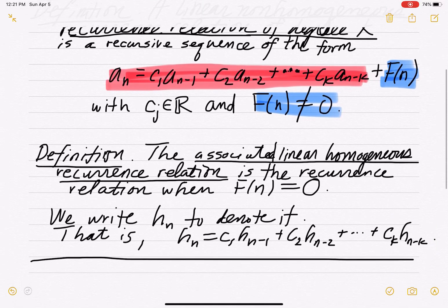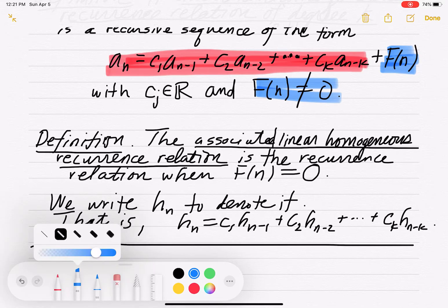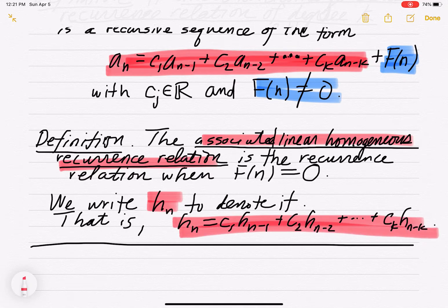Basically, if you were to make the Fn zero — if you were to make that blue Fn zero at the end — you would get the homogeneous part all by itself. We call that the associated linear homogeneous recurrence relation. We often call that Hn. So Hn is the associated homogeneous part: Hn equals C1·Hn-1 plus C2·Hn-2 plus so on and so forth, CK·Hn-K.